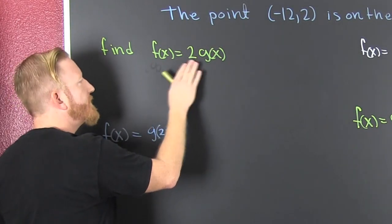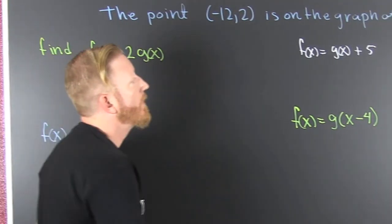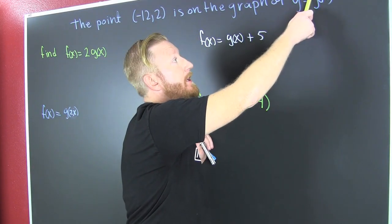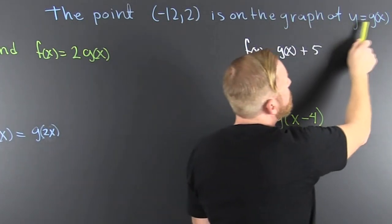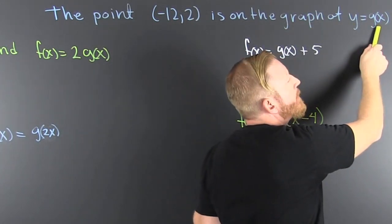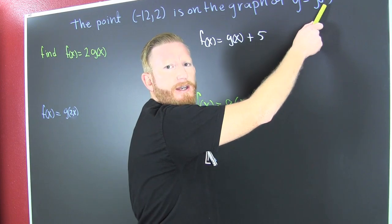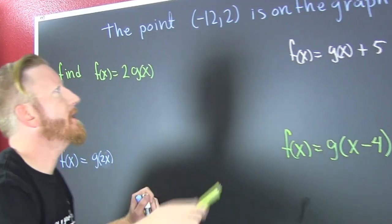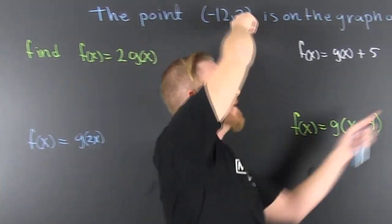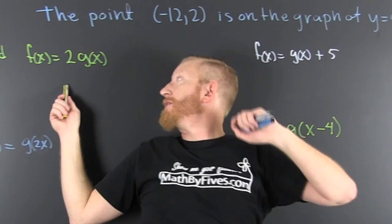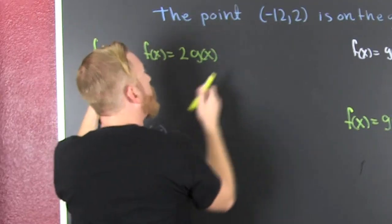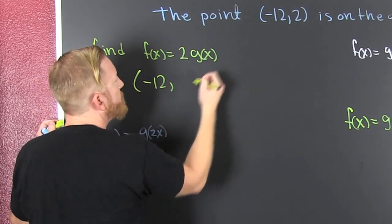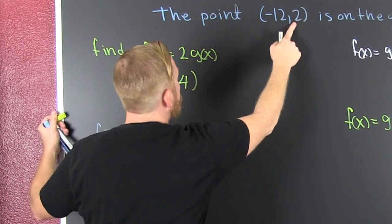I have f(x) equals twice g(x). Now, this is y, the function formerly known as g(x). We're doing 2 times g(x), so 2 times g(x) is 2 times y. I take that point and I double the y value, because y equals g(x). Here we're looking for twice g(x). So if I'm going to double my y, then my point is going to be (-12, 4), or 2 times 2.